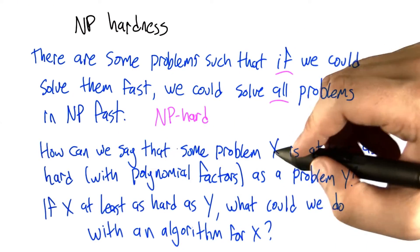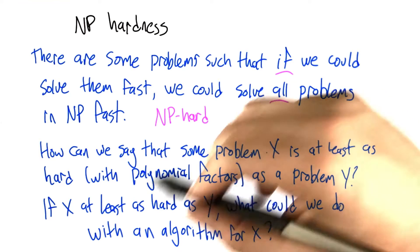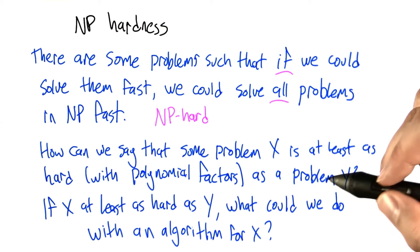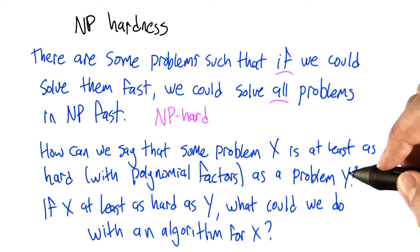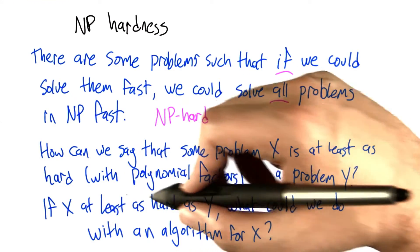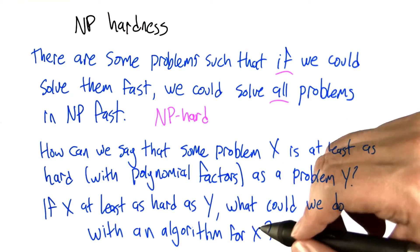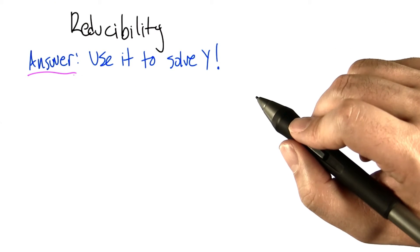So how can we say that some problem x is at least as hard, at least within polynomial factors, as some other problem y? Or to phrase it another way, if x is at least as hard as y, what could we do with an algorithm for x? Well, we could use it to solve y.